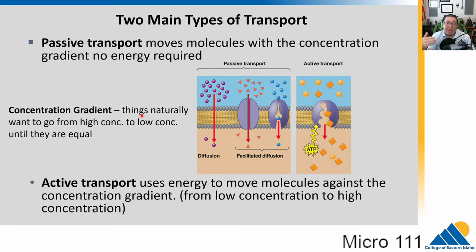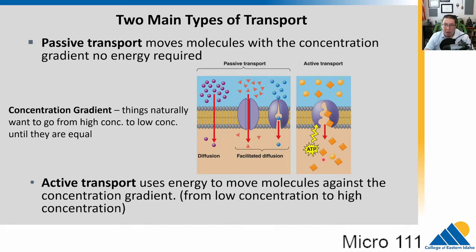If you want to move things against their concentration gradient — from low to high concentration — energy is required. That's active transport. For example, to pump toxins out of the cell, the cell burns ATP. The ATP powers a protein that pumps molecules across the membrane from low concentration to high concentration.